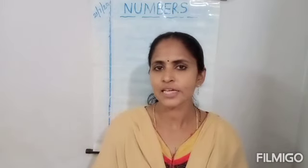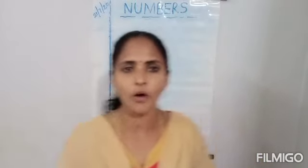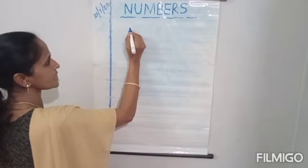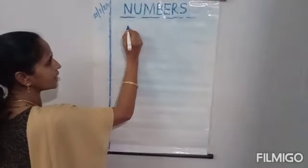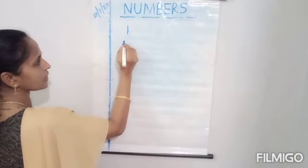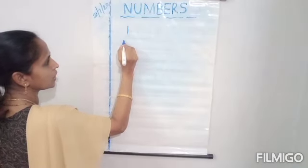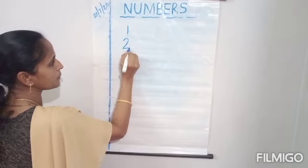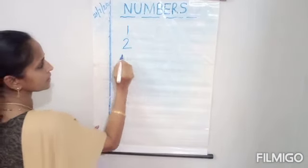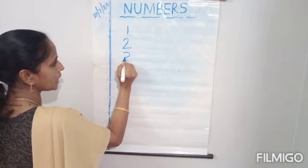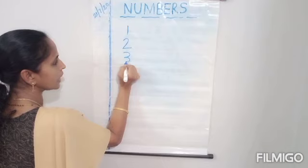Today, let us practice the numbers from 1 to 5. Let us see how to write. First, let us write number 1. Slanting line. Then, after 1, number 2. Curve. Slanting line. Then, 3. Curve. Again, one more curve down. 3.